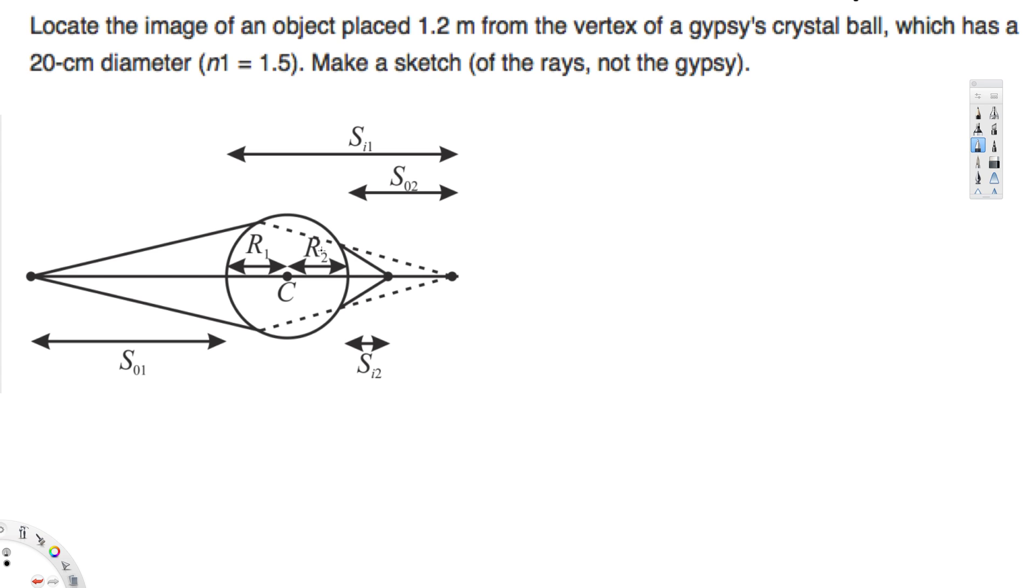And also we have now the general equation for a curved surface that's given by n₂/sᵢ₁ minus n₁/sₒ₁ is equal to (n₂ minus n₁)/r₁.